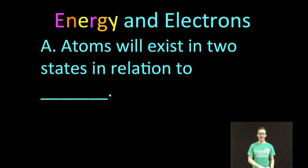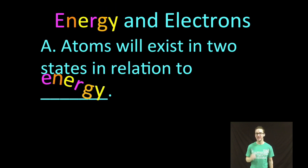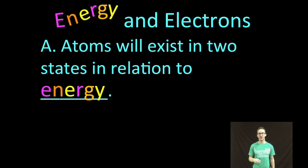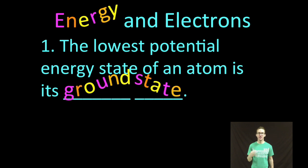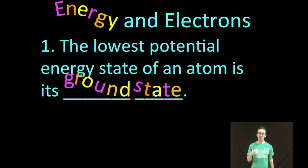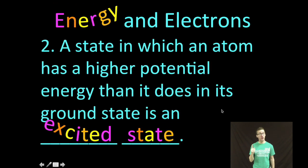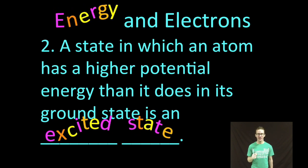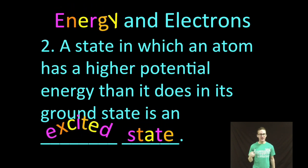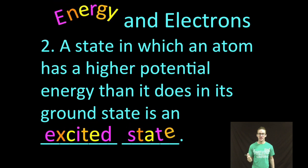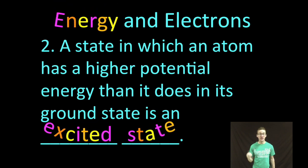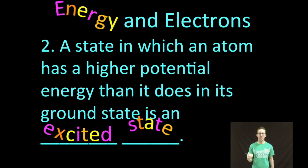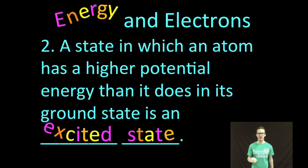Okay, so it is super important to know that atoms will exist in two states in relation to energy. Now, the lowest potential energy state of an atom is what's known as its ground state. However, an atom can also exist in what's known as the excited state. Woo! I'm so excited! And this is just a state in which its electrons are in higher energy levels than they would be when they're in the ground state, or when they're in the lowest energy levels possible.